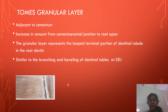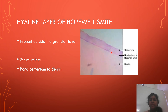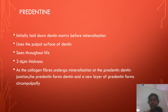Next, Tom's granular layer. This layer is seen adjacent to cementum and increases in amount from the cemento-enamel junction to the root apex. This granular layer represents the looped terminal portion of dentinal tubules in the root dentine, similar to the branching and beveling of dentinal tubules at the dentino-enamel junction. The Hyaline layer of Hopewell-Smith is present outside this granular layer — it is a structureless layer that bonds cementum to dentine. Next is predentine — the initially laid down dentine matrix before mineralization, which lines the pulpal surface of dentine. Predentine is seen throughout life and is 2 to 6 micrometers in thickness. As collagen fibers undergo mineralization at the predentine-dentine junction, predentine forms dentine and a new layer of predentine forms circumpulpally.